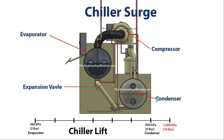When chiller surge occurs, the pressure in the condenser has become too great and the refrigerant starts to push back, flowing back through the discharge line and into the compressor in the opposite direction. The compressor will still continue to rotate, still trying to push refrigerant into the discharge line and into the condenser, but the pressure is already too great, so the refrigerant flows back through into the impeller blade and out through the suction line into the evaporator. This is not a good scenario — it can cause some really serious damage to the chiller.